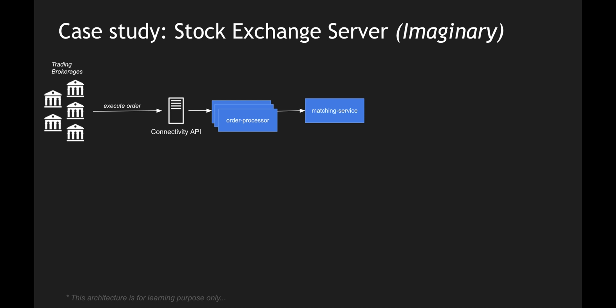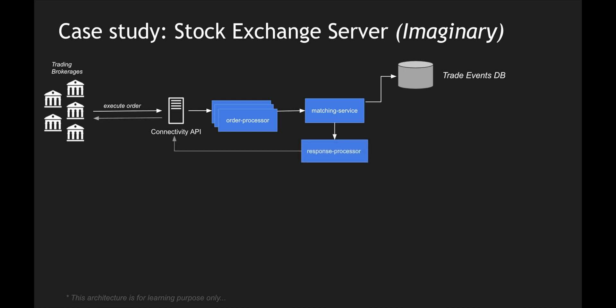Once the matching service identifies that there are some trades which have got matched and can be marked as executed, it will be persisting the data into its own database — we are calling it the trade events database. The trade events database holds both the buy and the sell that got matched. It also sends the copy via the response processor back to the connectivity API which connects back to the trading brokerages.